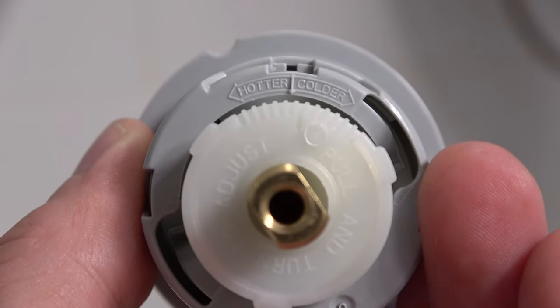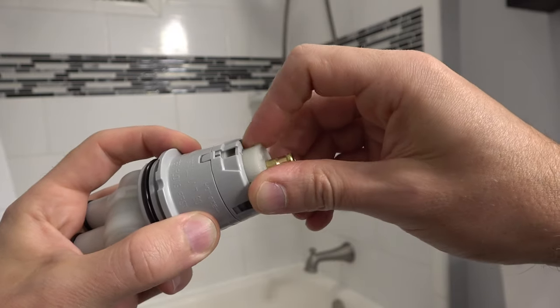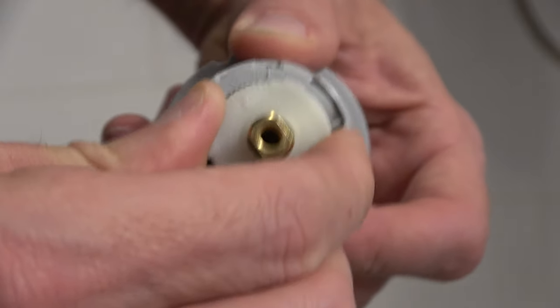Before installing the new one, you can adjust the general temperature to hotter or colder by pulling the middle cylinder out and twisting it to the left or the right.